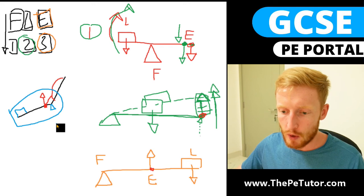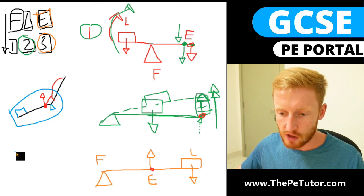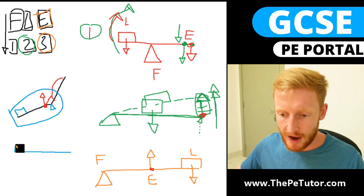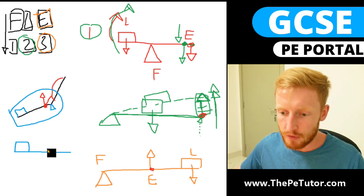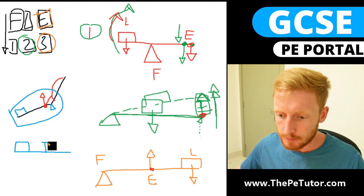We'd be looking at the radius ulna, we'd be looking at the hand slash racket slash ball slash shot slash resistance, we've got the effort in the middle, and we've got the fulcrum at the end.